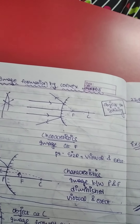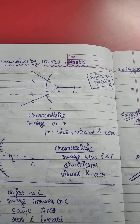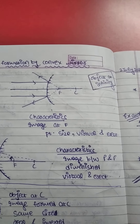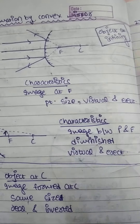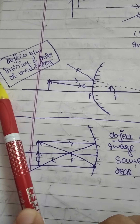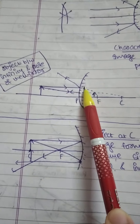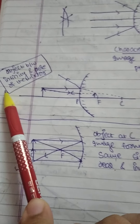We have 6 cases in concave mirror but in convex mirror we have only 2 cases: object at infinity, and object between infinity and pole. We have already done object at infinity, and now we will do object between infinity and pole — it can be anywhere between infinity and pole.